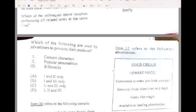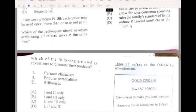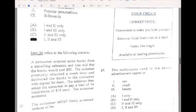Thirty-four, the most important reason for making a budget. Thirty-four will be A, avoid late payment of bills. Thirty-five. Which of the following are used to advertise and promote a product? We have cartoon character, popular personalities, billboard. If your answer for thirty-five is D, then you are correct.